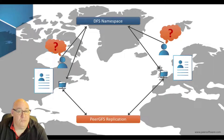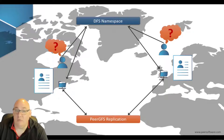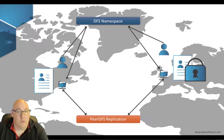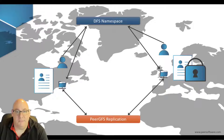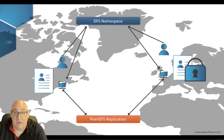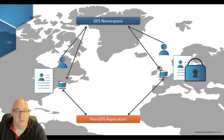The PeerGFS software from Peer Software not only takes care of the replication but also distributes real-time file locks. So when a file is opened in New York, that file is locked at all of the other locations, preventing version conflicts from happening in the first place. When the New York user finishes and closes the file, that distributed file lock is lifted and users in the other locations can open their local copy of the file again.